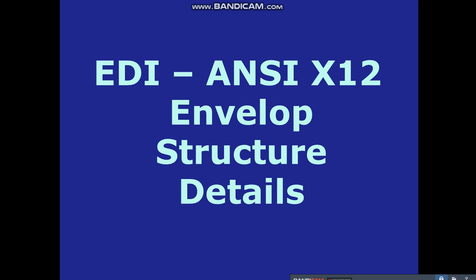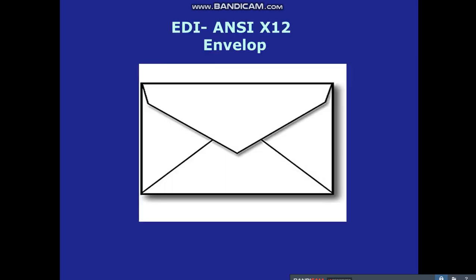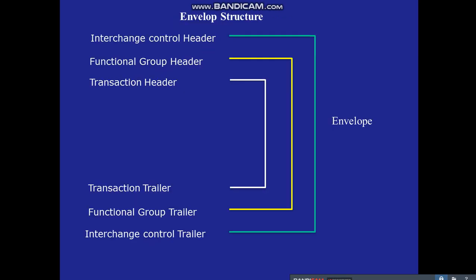If a system receives an EDI file in the proper structure and proper format, compliant with the standard, only then can the data be processed. The EDI ANSI X12 structure is like an envelope — everything is enclosed within a header and trailer. There are three envelopes: the first is the interchange control envelope, which has an interchange control header and an interchange control trailer.